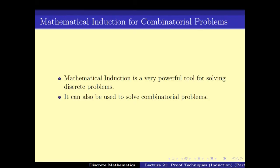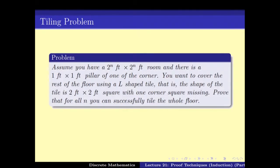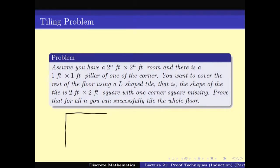What do we mean by combinatorial problems? Problems which deal with combinatorial objects, not just numbers. Here is a simple problem: you have a 2^n × 2^n room with a pillar in one corner. The dimension of this room is 2^n feet on each side.